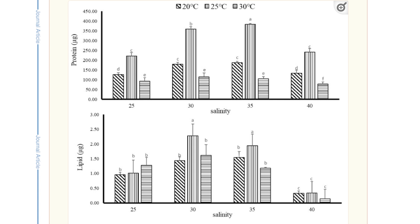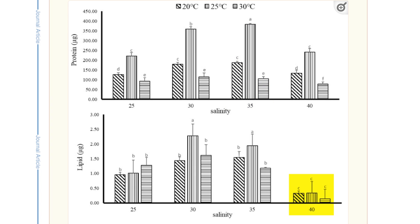Their chart demonstrates this pretty convincingly. After eight weeks, the protein composition of the coral was much lower at 40 parts per thousand salinity than at 35, which most reefers maintain. And the fat content was dramatically lower at the elevated salinity as well. Salinity clearly played a big role in this experiment — survival not being the primary measurement, but rather how these environmental changes stress the animals. So how does this tie back to two-part?